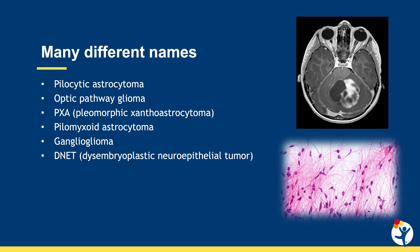Low-grade gliomas present with lots of different kinds of names. This includes pilocytic astrocytoma, the most common low-grade glioma in pediatric patients. There's also optic pathway gliomas, which can affect vision. Low-grade gliomas with more exotic names like pleomorphic xanthoastrocytomas, or PXAs, pilomyxoid astrocytomas, or gangliogliomas. There are also tumors known as DNETs, or dysembryoplastic neuroepithelial tumors, which are often associated with seizures.